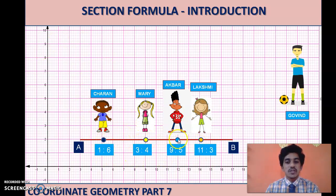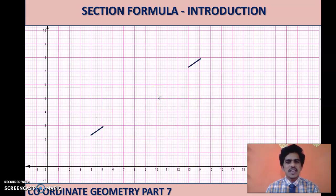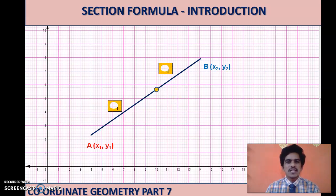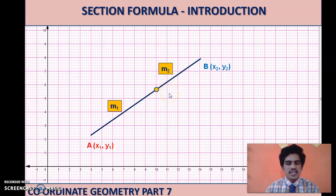The ratios are different because the positions of the children are different. Now let us take the case of a line segment AB with coordinates (x1, y1) and (x2, y2). We have a point P which divides the line segment in the ratio M1 is to M2 — just as we took the cases 1 is to 6, or 9 is to 5, or 11 is to 3. We need to find the coordinates of this point P given the ratio.